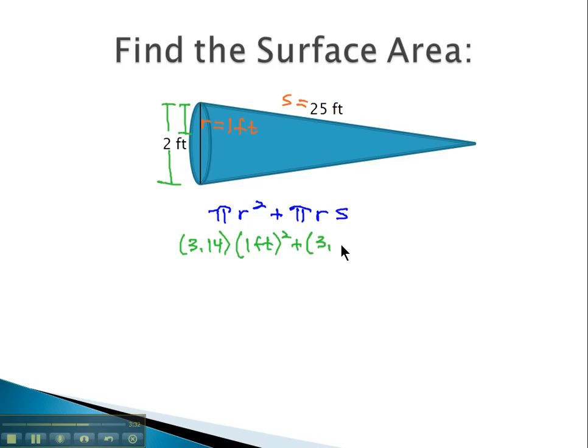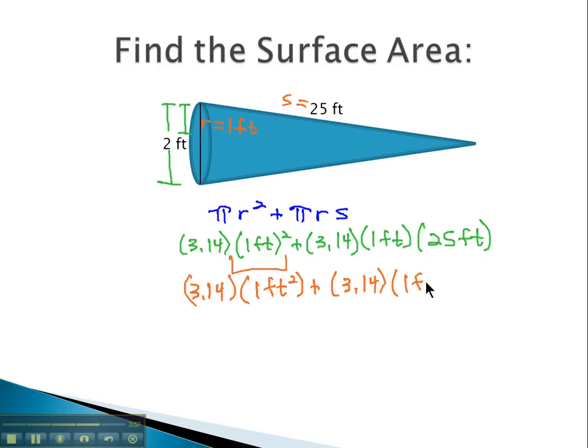Plus pi, which is 3.14, times the radius. Again, it's 1 foot, times s, the slanting height of 25 feet. And again, it's order of operations, where we do the exponent first. 3.14 times 1 squared is 1 square foot, and there's no exponents in the second part. 3.14 times 1 foot, times 25 feet.